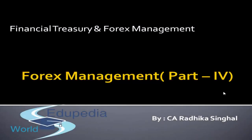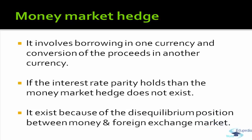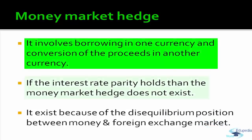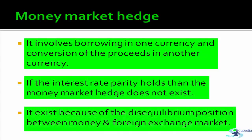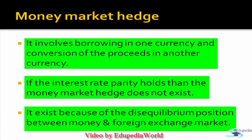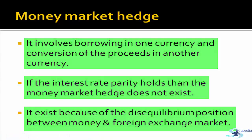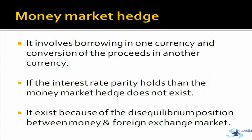Welcome to Edipedia World. We were discussing different methods of hedging. Today we continue with one more method: money market hedge. Money market hedge is a type of hedging that involves borrowing in one currency and converting the proceeds into another currency. This type of hedging is only used where there is a disequilibrium between the money market and the foreign market — that is, where the interest rate parity theorem does not hold, meaning the interest rate differential is not equal to the spot and forward rate differential.